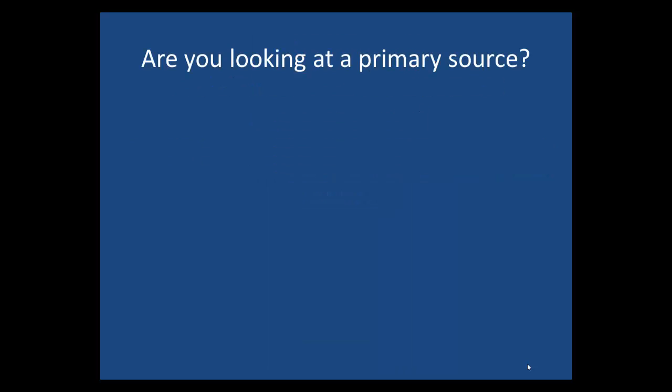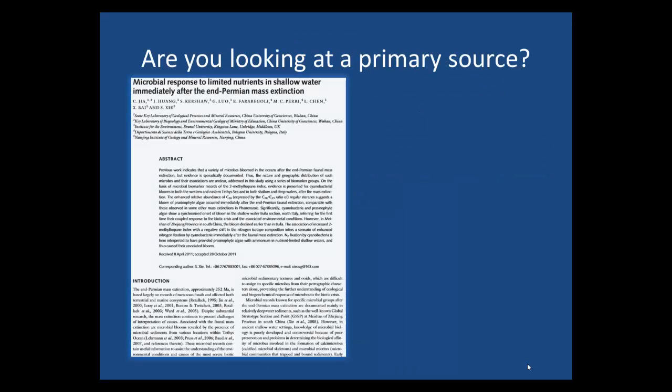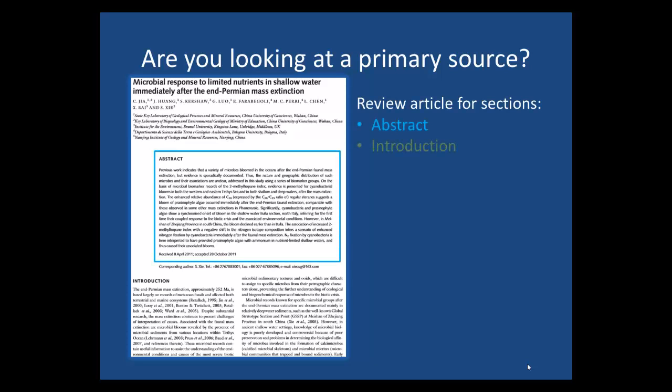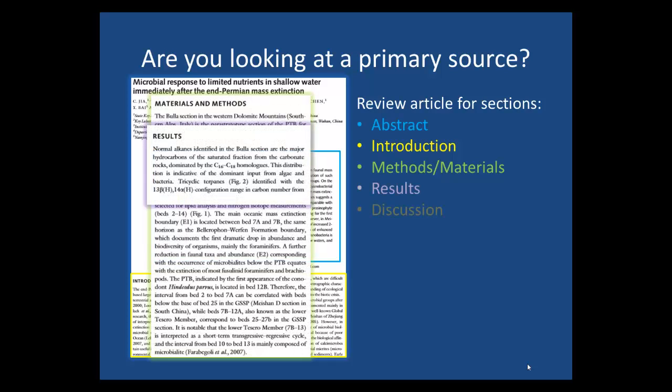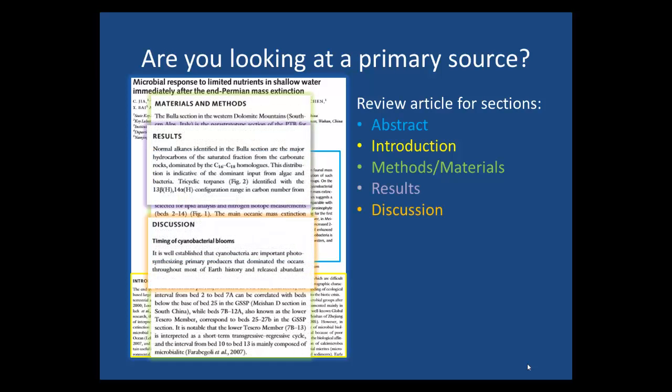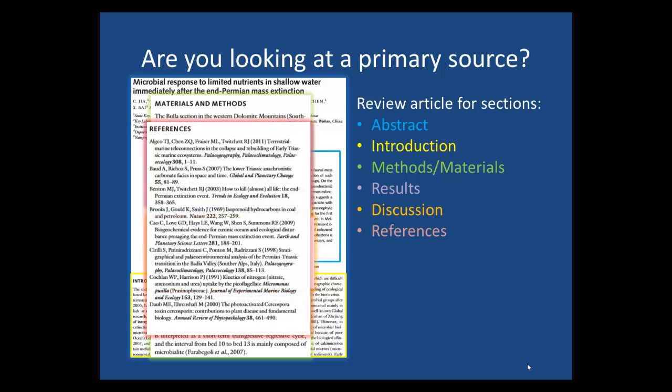When you find an article that may be a primary source, before taking the time to read the entire thing, scan it to see if it has all six sections. They should be clearly marked as these are, but occasionally they might have different terms. If you have any questions, make sure you ask.